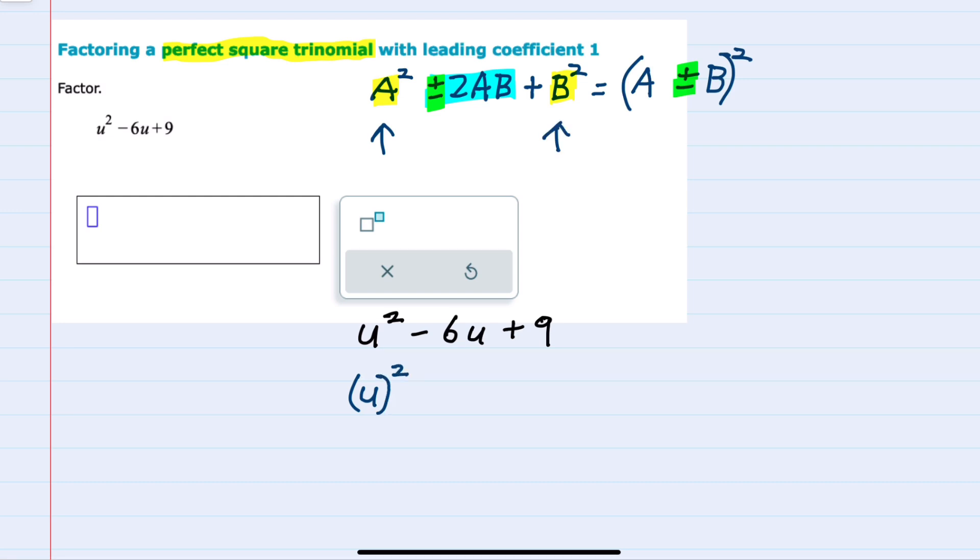Doing the same for the last term, which also needs to be a perfect square, can I write that as something squared? 9 can be written as 3 squared.